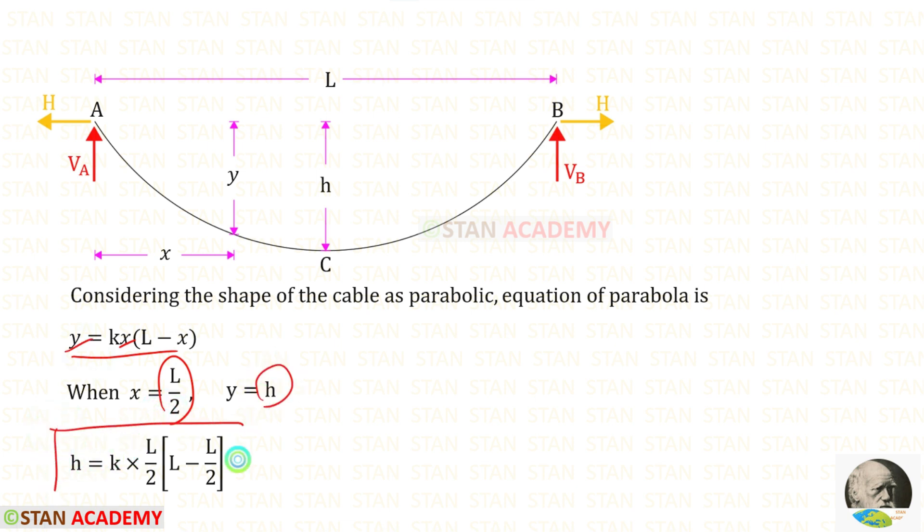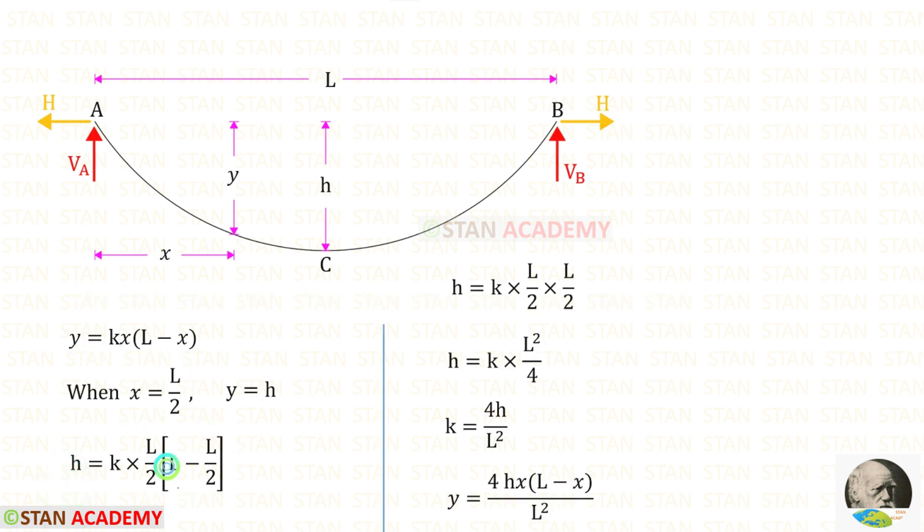L minus L upon 2 is L upon 2. Finally for k we will get 4h upon L square. In this equation for k let us apply this. So that we will get this equation.